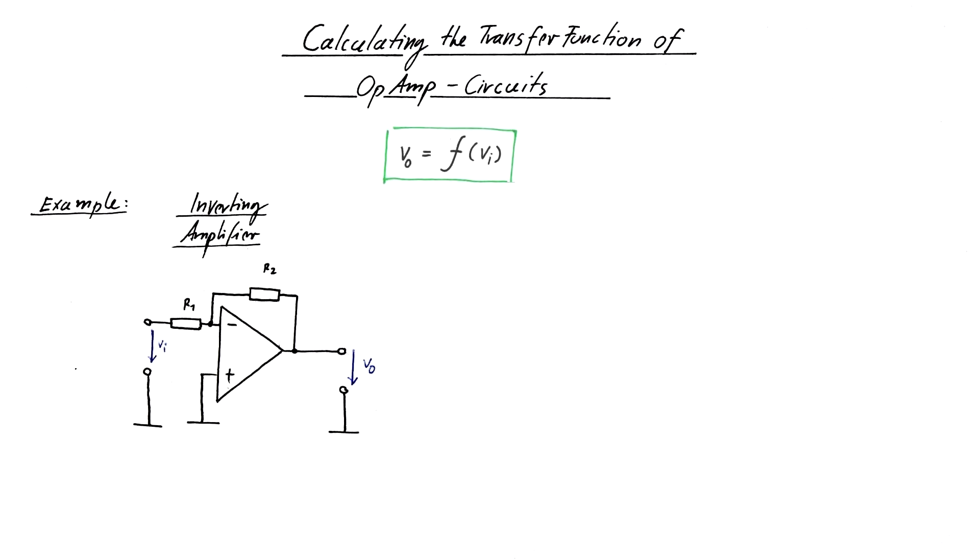The mathematical function that describes the output voltage of an op-amp as a function of its input voltage is called the transfer function. The transfer function of the inverting amplifier is V out equals minus V in times R2 over R1. You will recognize the amplification factor minus R2 over R1 from Dave's video.